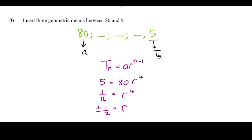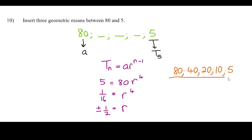Let's look at the two options. If we start with 80 and r is a half, the next term is 40, then 40 × ½ = 20, then 20 × ½ = 10, and 10 × ½ = 5. It fits perfectly.